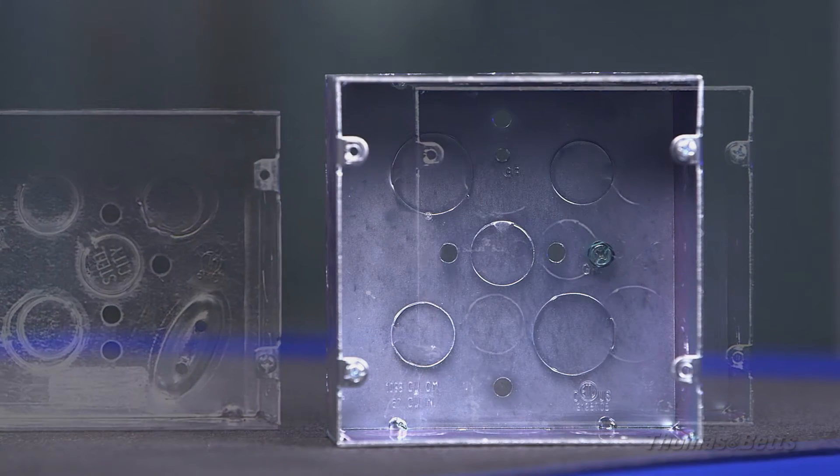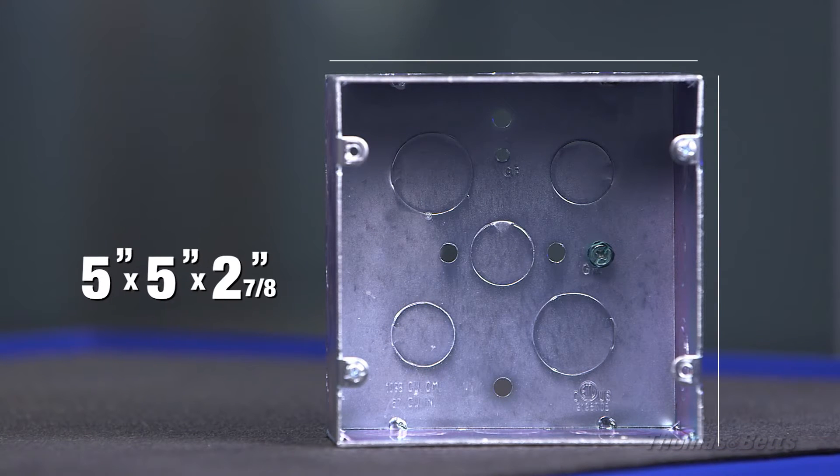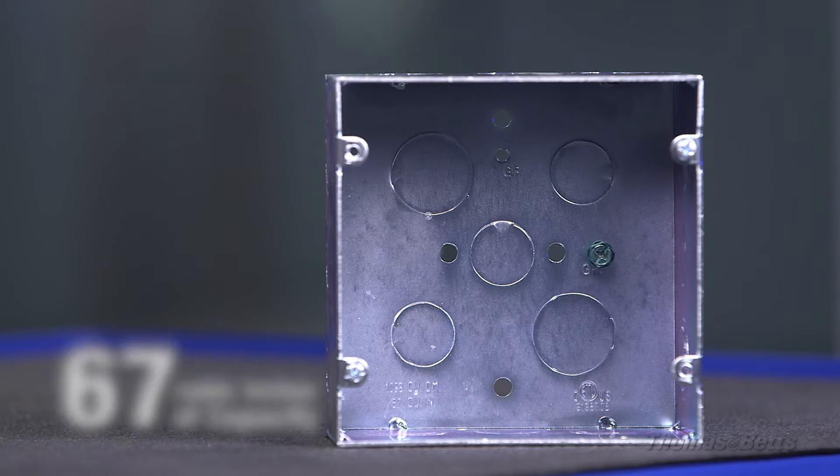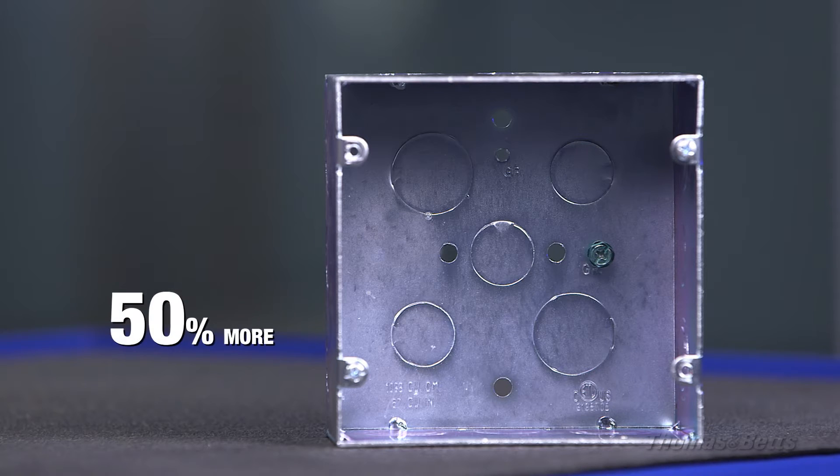Overall box dimensions are five inch by five inch by two and seven eighths inch for up to 67 cubic inches of capacity. That's more than double the capacity of a four square deep box and fifty percent more capacity than a four and eleven sixteenths inch deep box.